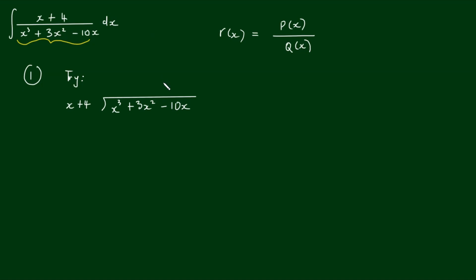I assume you're already familiar with this process, so we'll go through this quickly. We're going to multiply x plus 4 by x squared. x squared times x gives us x cubed, x squared times 4 gives us 4x squared. If we subtract, we end up with negative x squared.